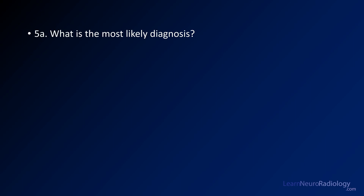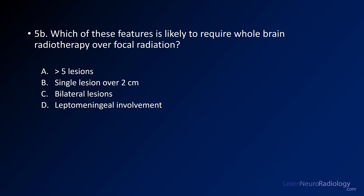Your first question is: what is the most likely diagnosis? And your second question is: which of these features is likely to require whole brain radiation? Is it more than five lesions, a single lesion over two centimeters, bilateral lesions, or leptomeningeal involvement?